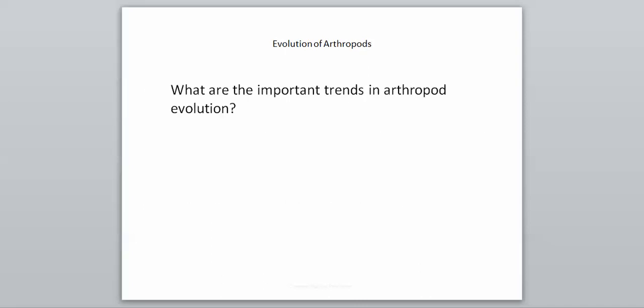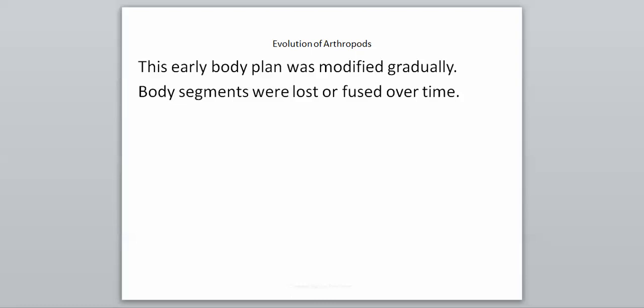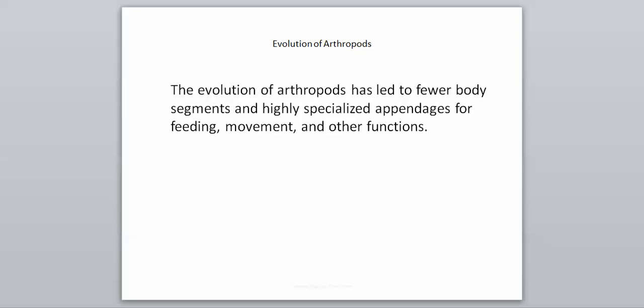Now let's look at important trends in arthropod evolution — how arthropods became what they are today. A typical primitive arthropod was composed of many identical segments, each carrying a pair of appendages. If you look at the diagram, you can see the segments in the middle and the individual appendages extending off to the sides. This early arthropod is known as a trilobite. This early body plan was modified gradually — body segments were lost or fused together over millions of years, so there are not as many numerous body segments in arthropods today.